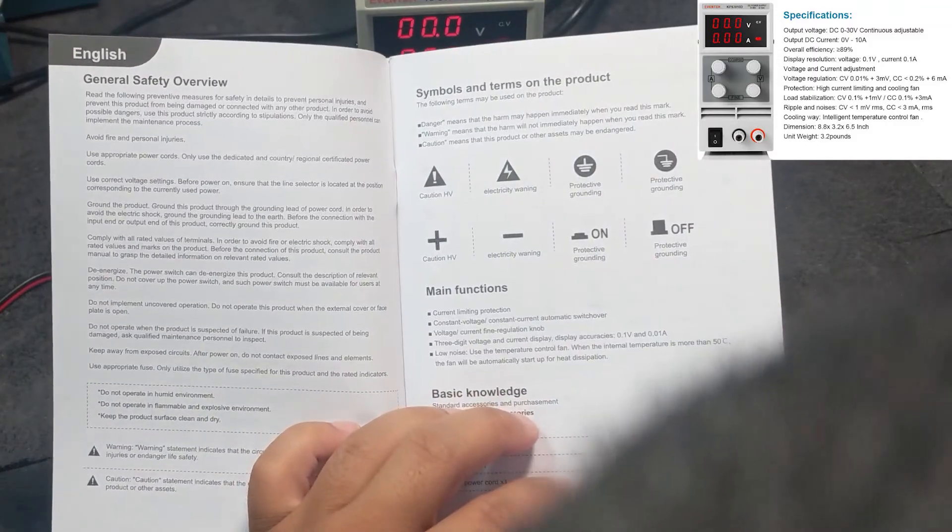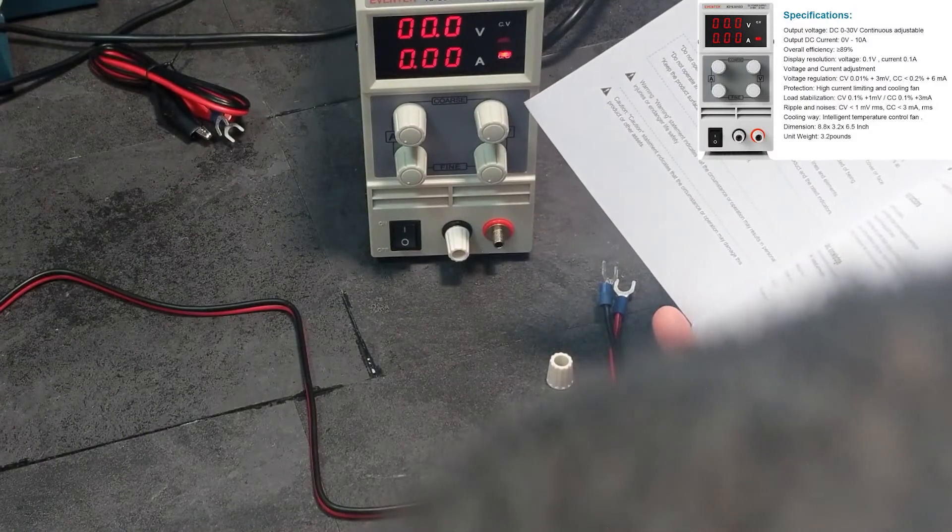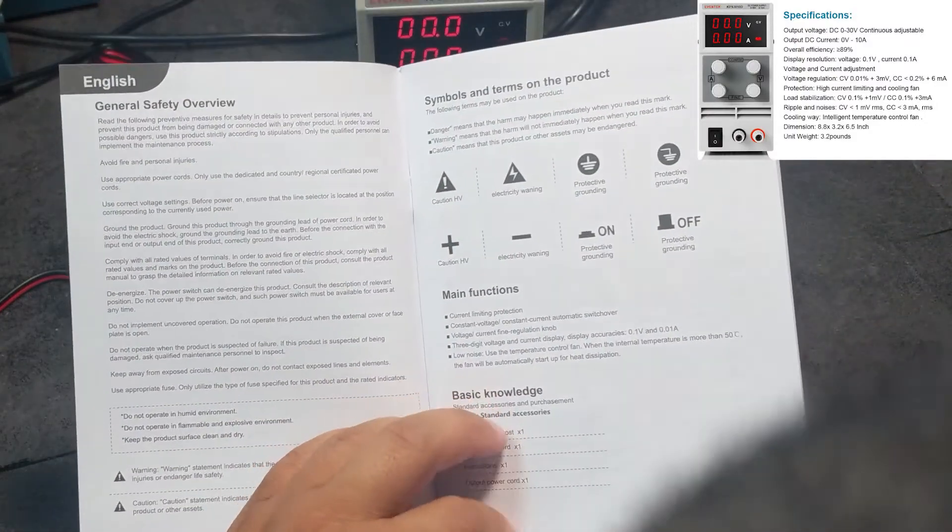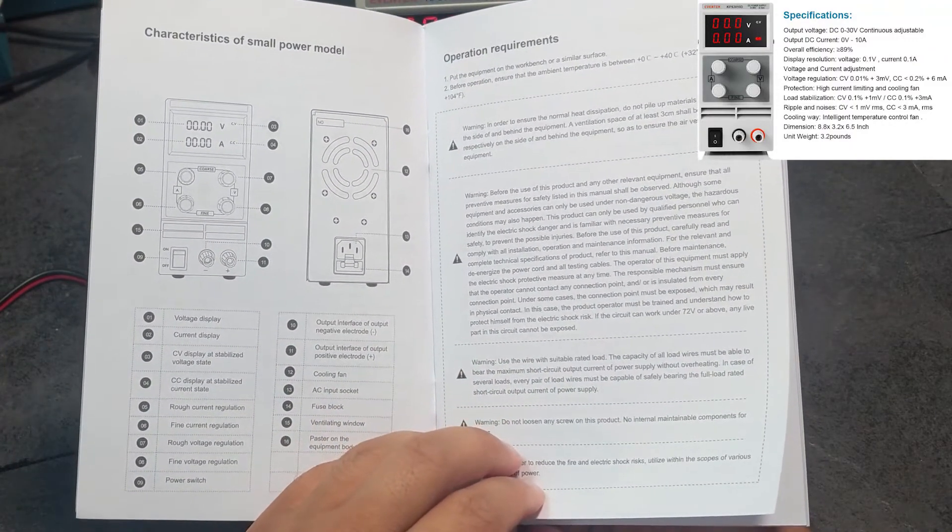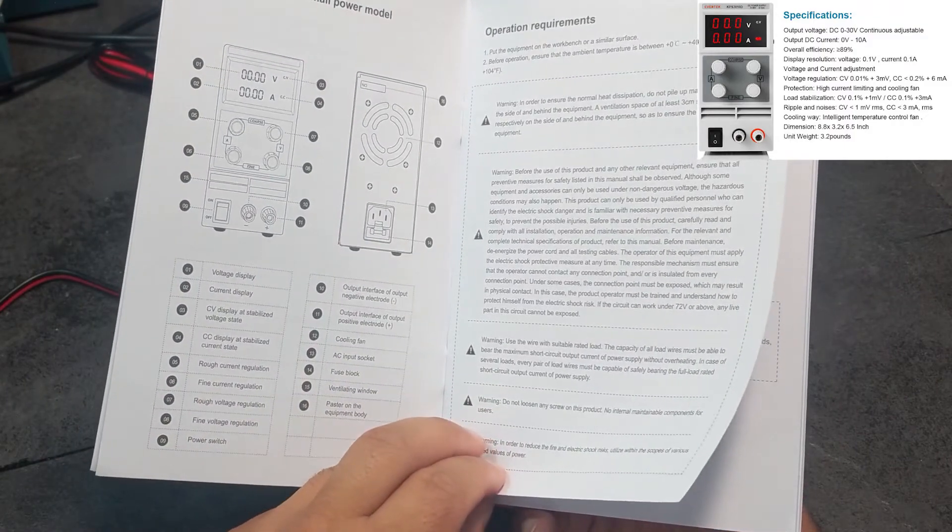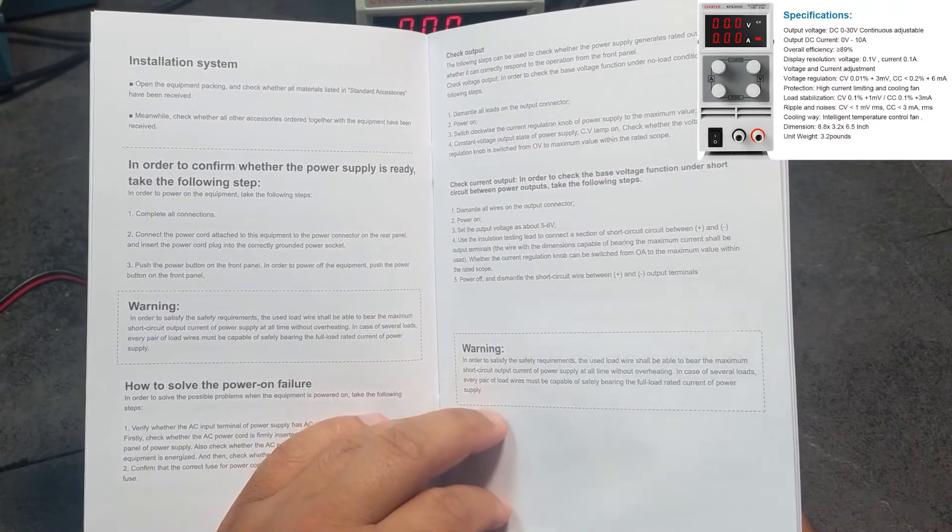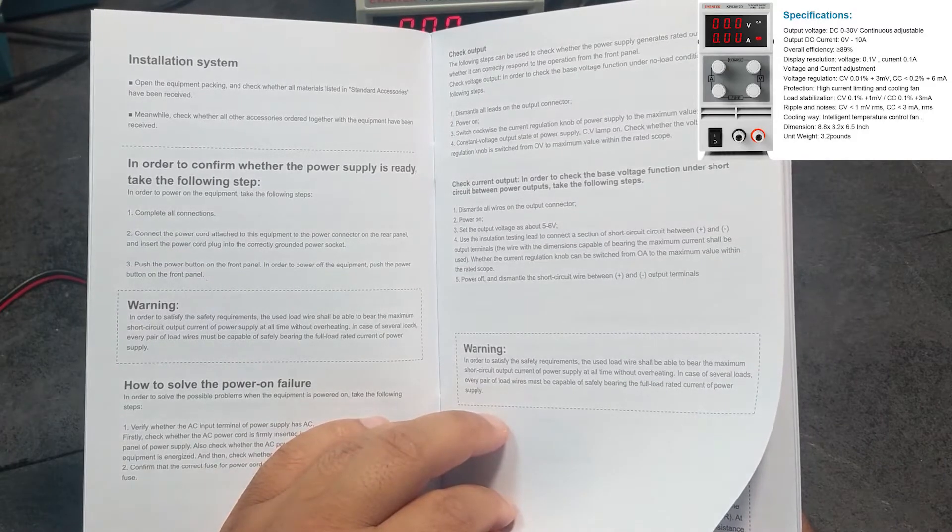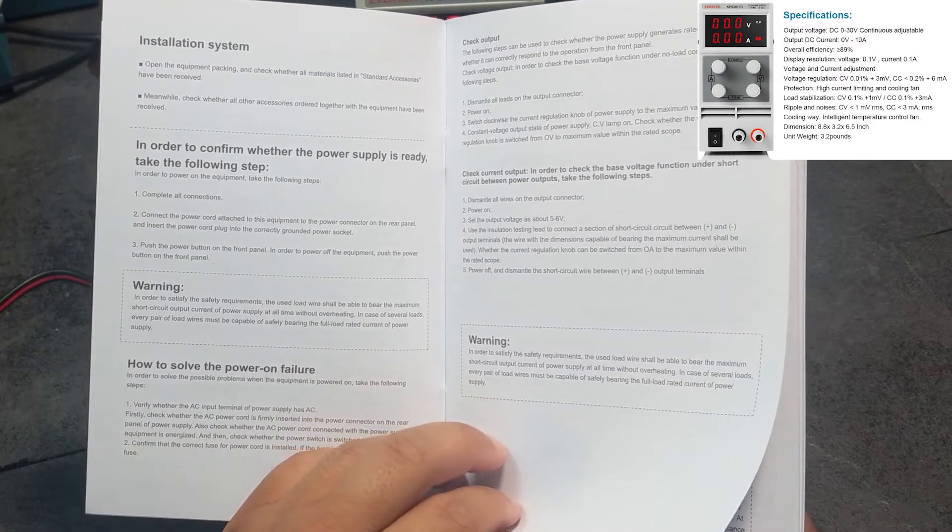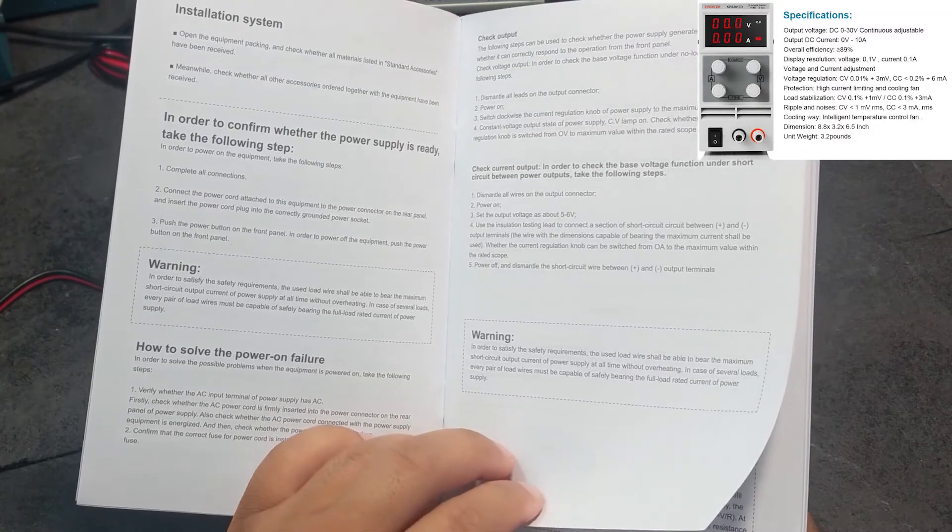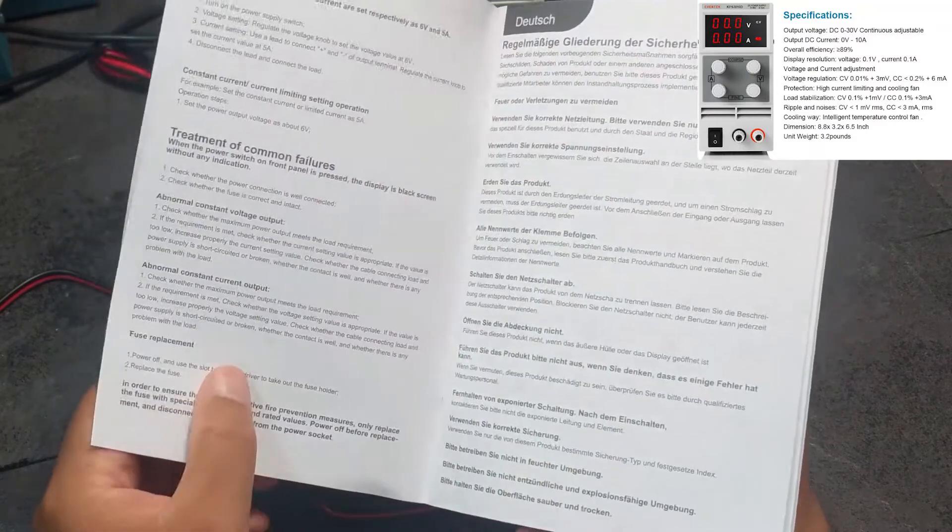Let's read the manual. Protective grounding, on, off. I can't see that symbol. Voltage display, current display, CV display, rough current regulation. In order to confirm whether the power supply is ready, take the following steps: complete all connections, connect the power cord attached to the equipment, insert the power plug, push the power button on the front panel. How to solve the power on failure.